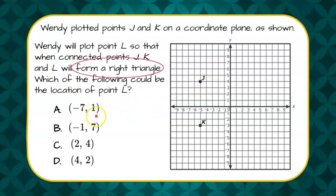I'm going to plot all our choices. The first one, we're going to go left negative 7 and up 1. Then we're going to go left negative 1 and up 7.